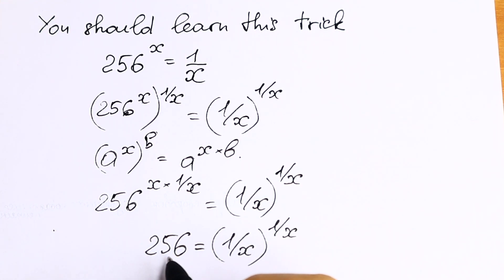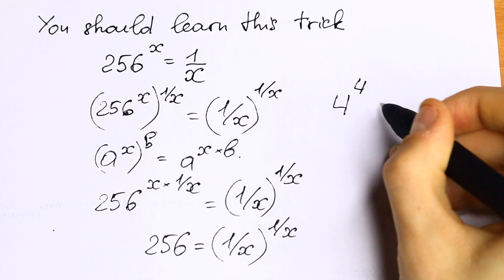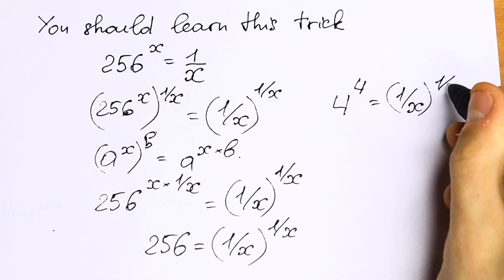On the left we have a number, but this 256 we can write as 4 to the 4th power, equal to 1 over x to the power 1 over x.